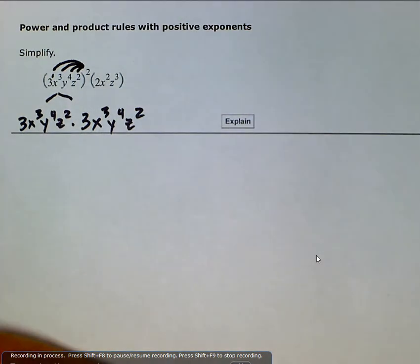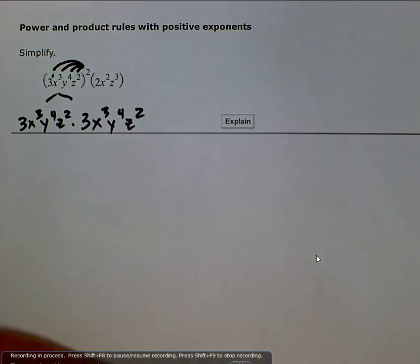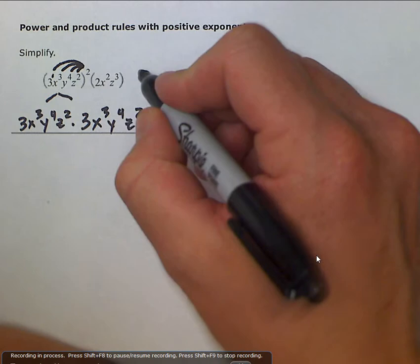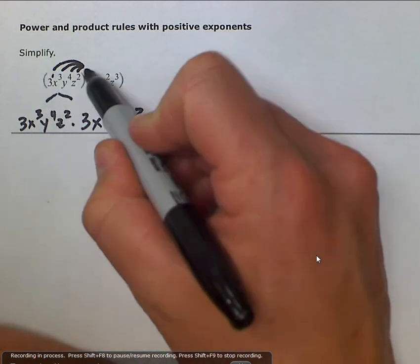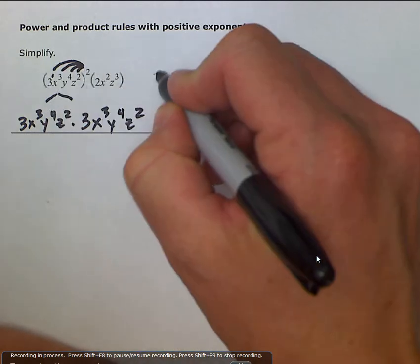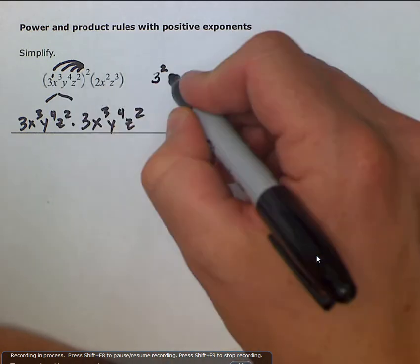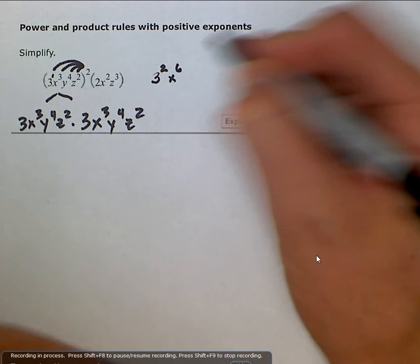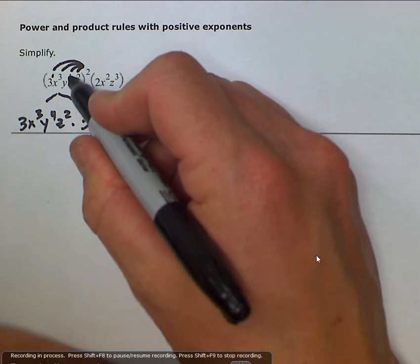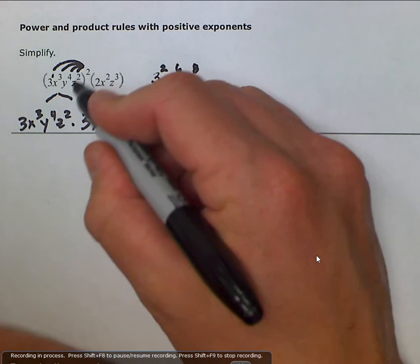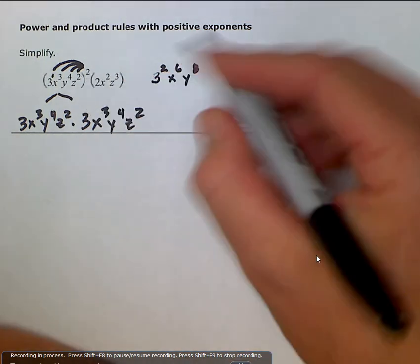It gets distributed to all of those exponents. And when we say distribution, we imply multiplication. So we could rewrite this as three to the one times two, which is three squared, x to the three times two, which is x to the sixth, y to the four times two, which is y to the eighth, and z to the two times two, which is z to the fourth.